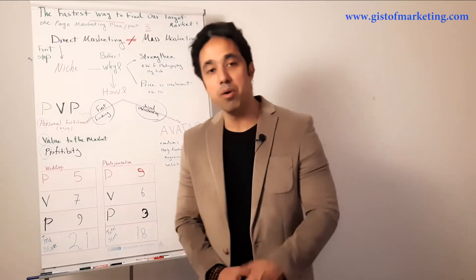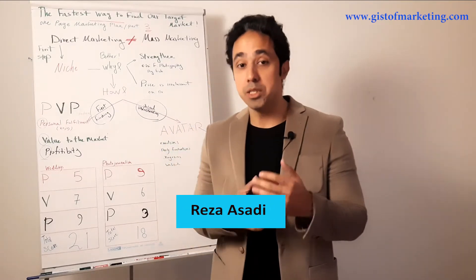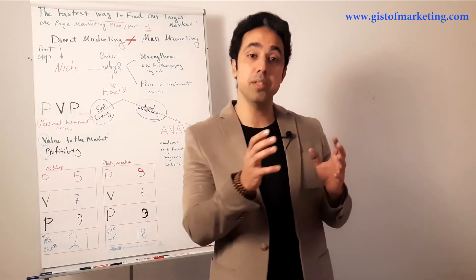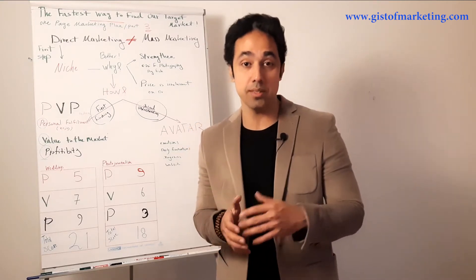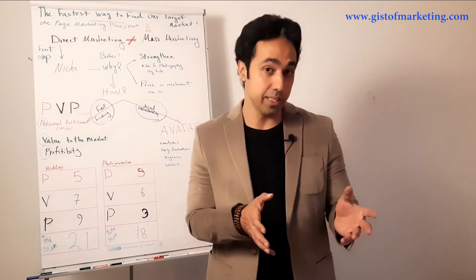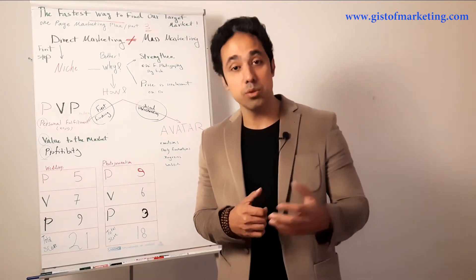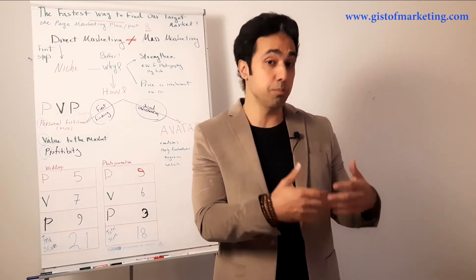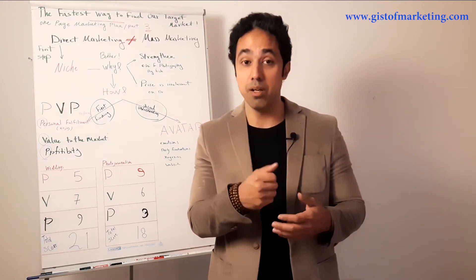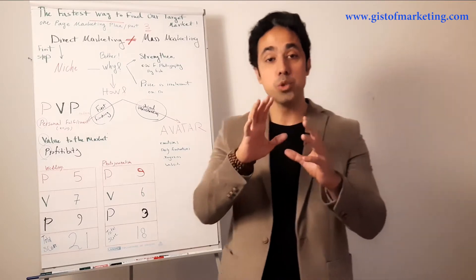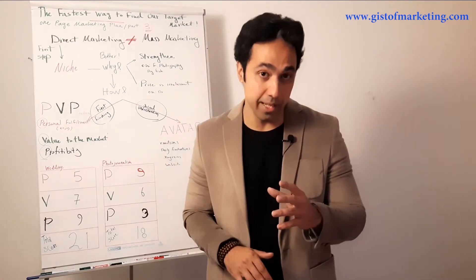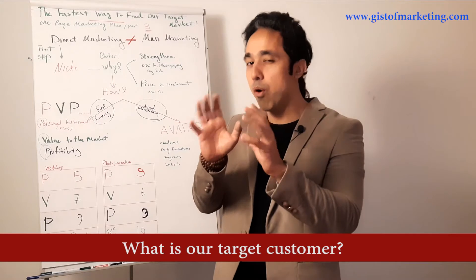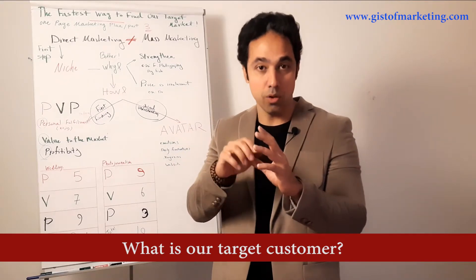Hi guys, welcome to G-Stop Marketing. My name is Reza and today we are going to continue the third part of the One Page Marketing Plan by Allan Dib. In the first session we talked about the differences between tactics and strategies, and in the second part we talked about mass marketing versus direct response marketing. We concluded that the best strategy for small and medium-sized businesses is direct response marketing. Today we want to do the first part of the one page marketing plan — finding out who our target customer is and which part of the market we should focus on.